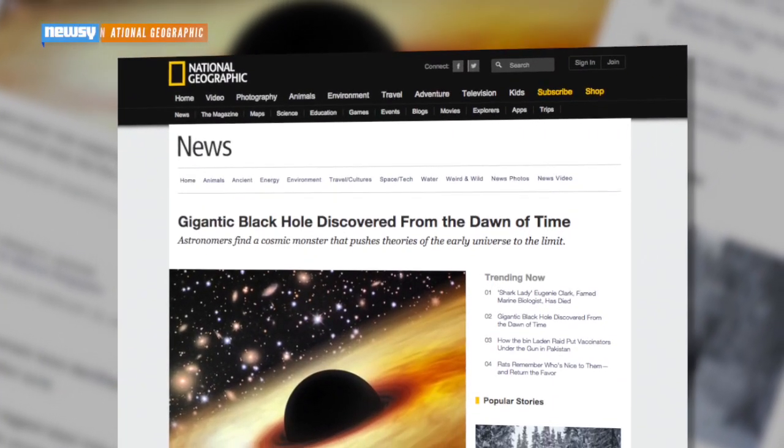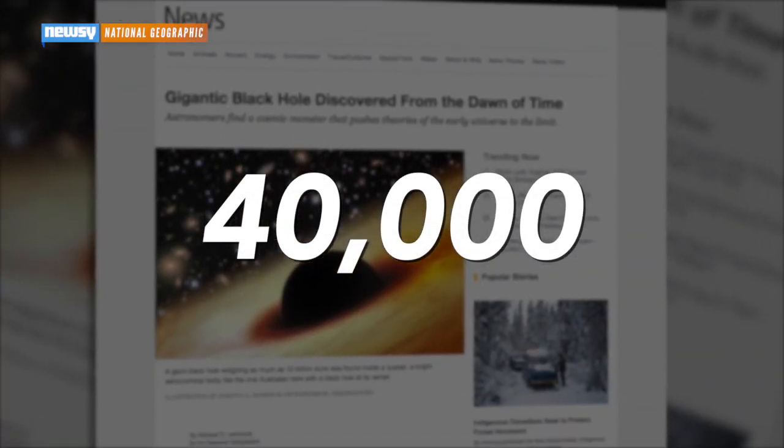One of the researchers told National Geographic it's about 40,000 times brighter than the entire Milky Way. So that leaves scientists looking for new theories to explain it. One of those theories is that right after the Big Bang, stars much more massive than any of the ones we know about existed and inevitably collapsed, leading to the black hole.